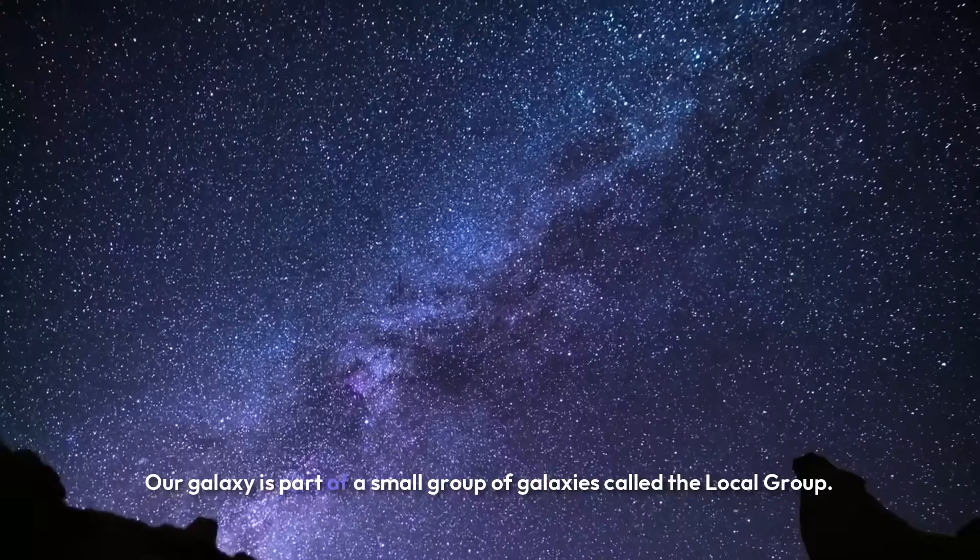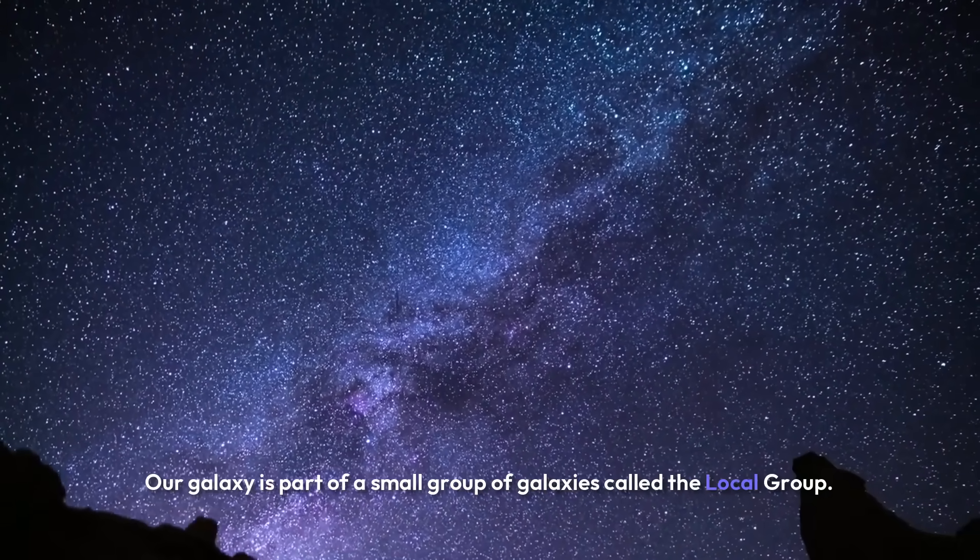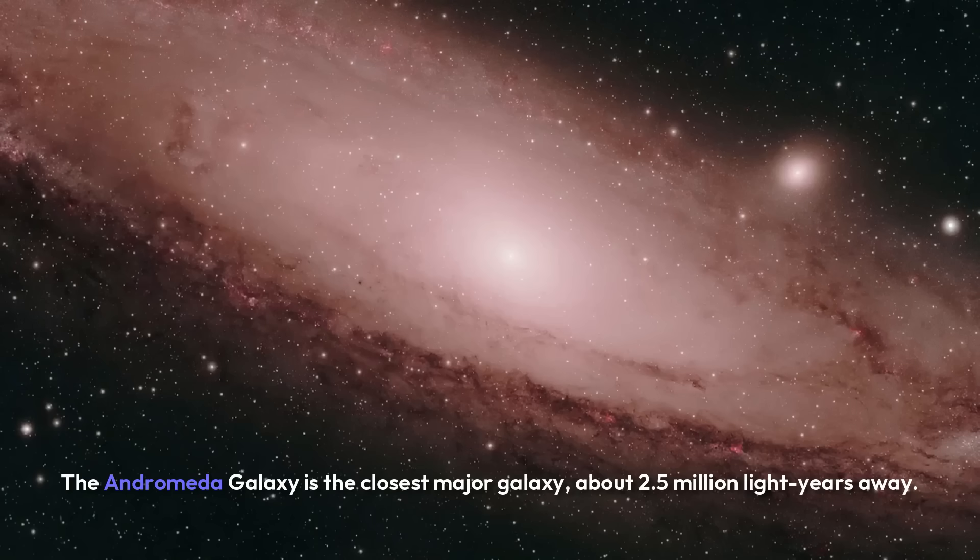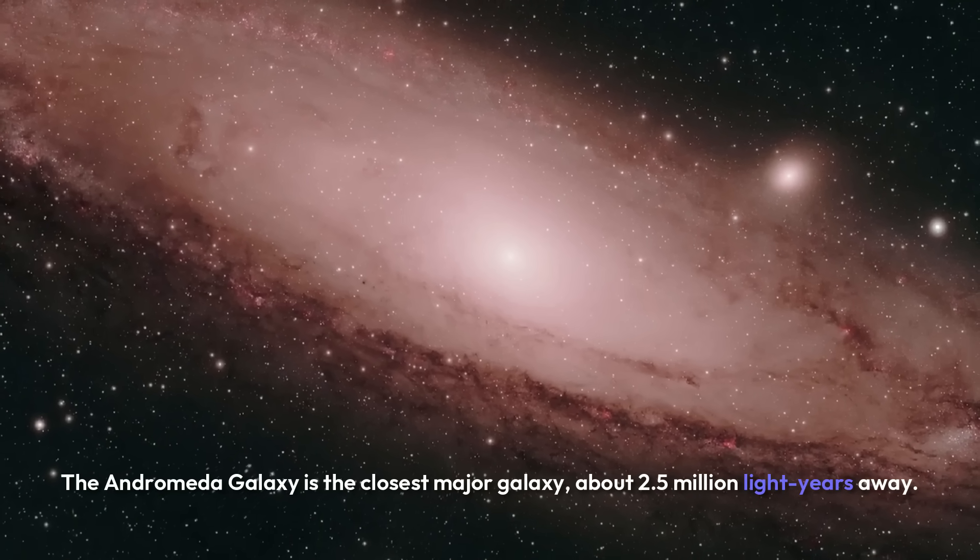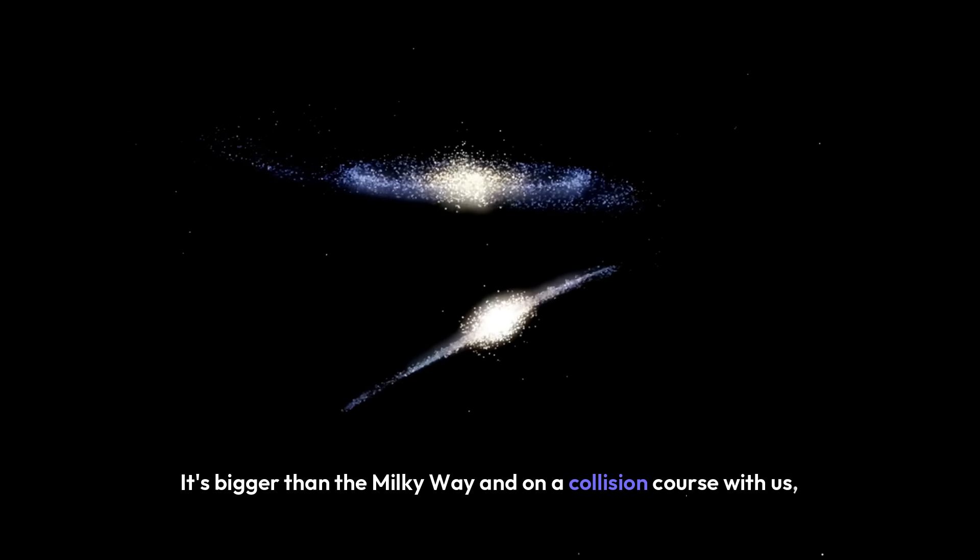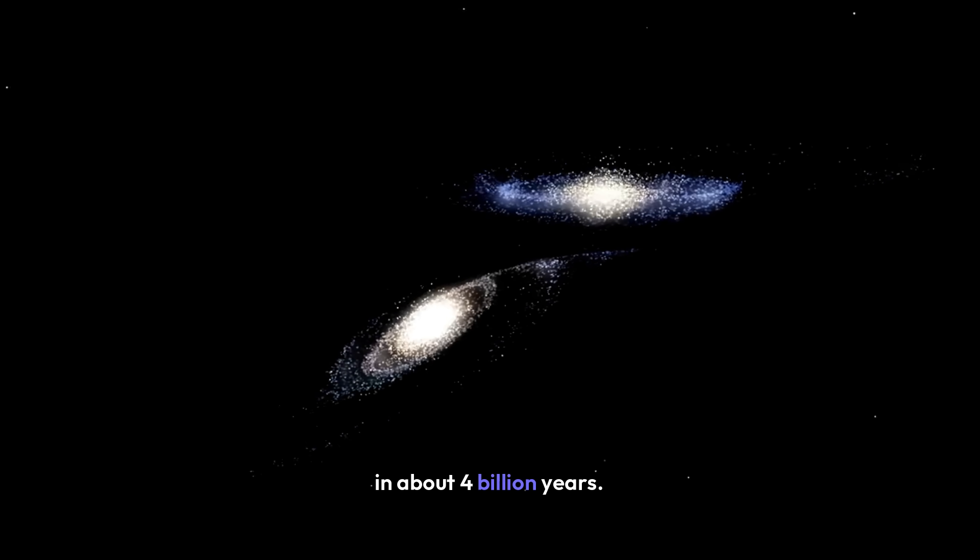Our galaxy is part of a small group of galaxies called the Local Group. So what's near us? The Andromeda galaxy is the closest major galaxy, about 2.5 million light years away. It's bigger than the Milky Way and on a collision course with us, in about 4 billion years.